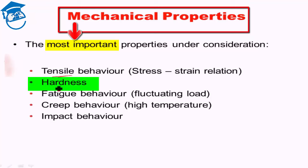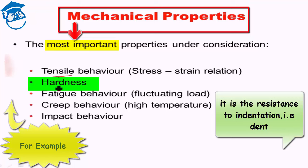Hardness is basically the resistance to indentation. If a point load of very high magnitude is applied at a particular location on a material, the resistance of the material to that indentation is what hardness measures. Fatigue behavior is the behavior of a material under fluctuating load.